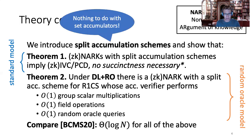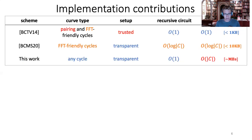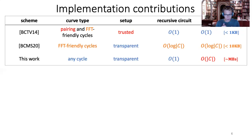I want to point out that split accumulation schemes are about accumulating verification and have nothing to do with set accumulators. Our scheme has really interesting asymptotics: a very small recursive circuit and no trusted setup — the setup is transparent. Additionally, these recursive circuit constructions require cycles of curves. Historically, you needed cycles where both curves are pairing-friendly or FFT-friendly, which makes it very hard to find cycles with good properties. For us, it suffices to find any cycle where we believe the discrete logarithm is secure in all groups on the cycle, which is much easier to find.